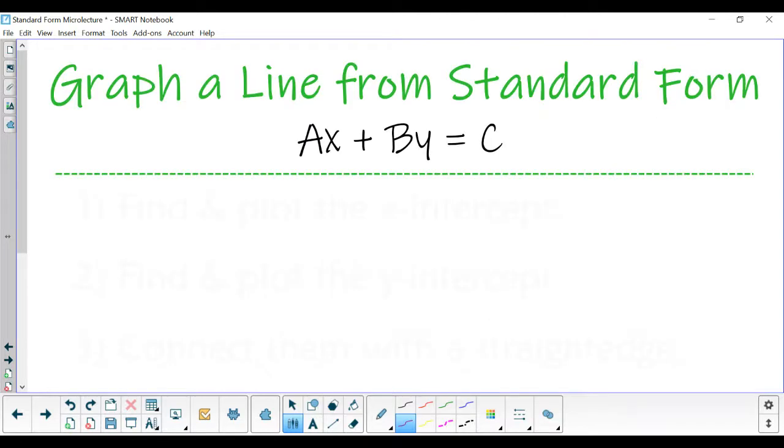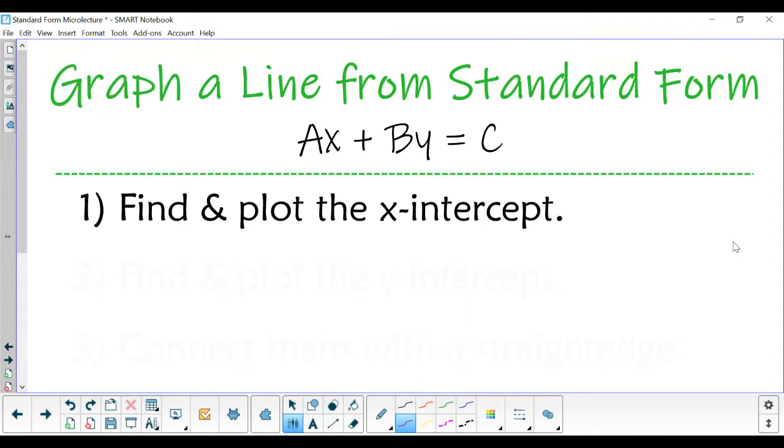That is all we need to know to graph a line from standard form. If we're going to do so, first you want to find and plot the x-intercept. And again, you're going to find the x-intercept by plugging in 0 for y.